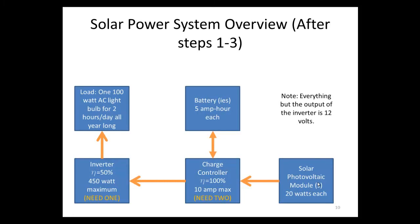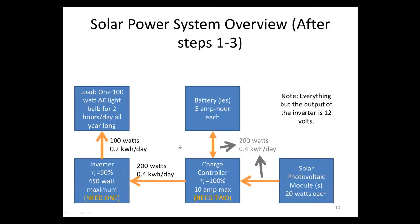To review what we've done so far: we found that we need one inverter and two charge controllers. Going to the load is 100 watts when it's on, and the energy needed is 0.2 kilowatt hours per day. When the light bulb is on, the inverter is drawing 200 watts from the charge controller, and the energy coming from the charge controller is 0.4 kilowatt hours per day. This means we need to supply — either from the battery or from the solar module — 0.4 kilowatt hours per day.